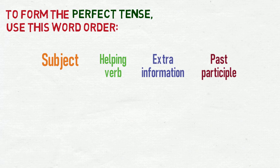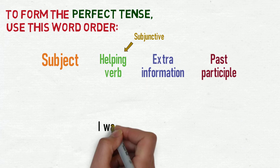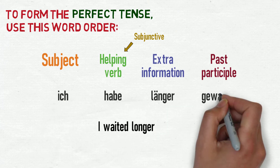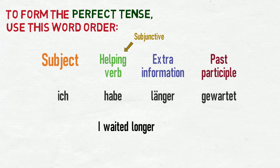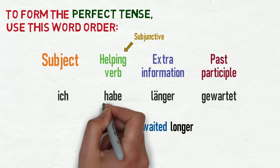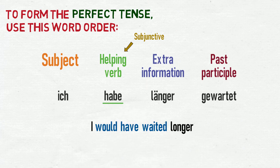To form the conditional perfect, all we have to do is use the subjunctive form of the helping verb. Let's look at an example. To say 'I waited longer' in the perfect tense, to make this into 'I would have waited longer', all we do is change the helping verb habe into its subjunctive form, hätte. So the sentence becomes: ich hätte länger gewartet — I would have waited longer.